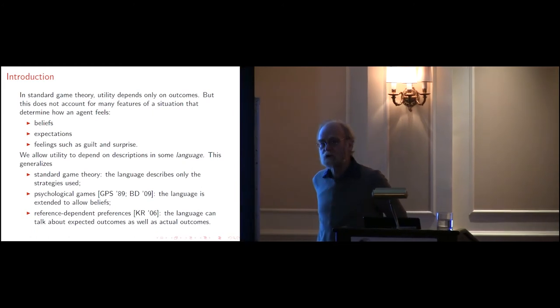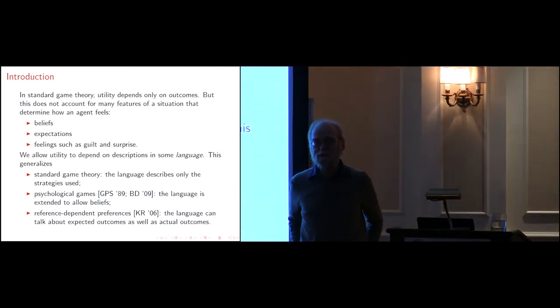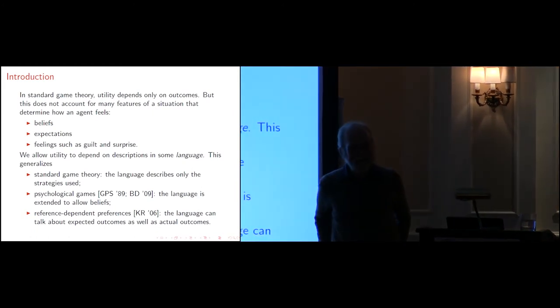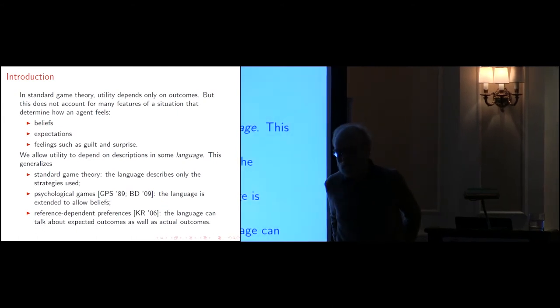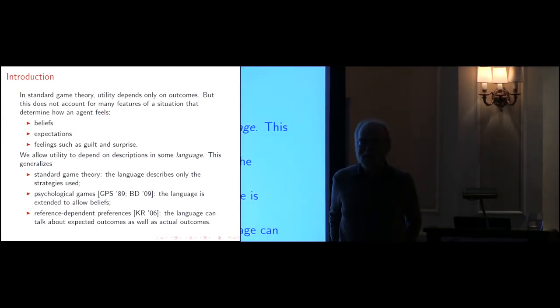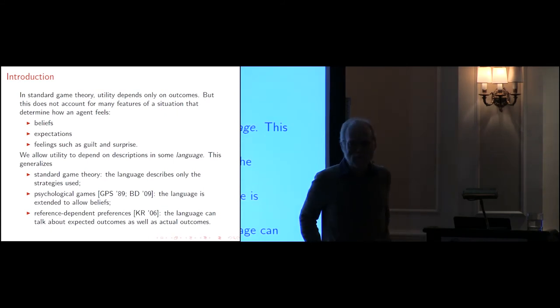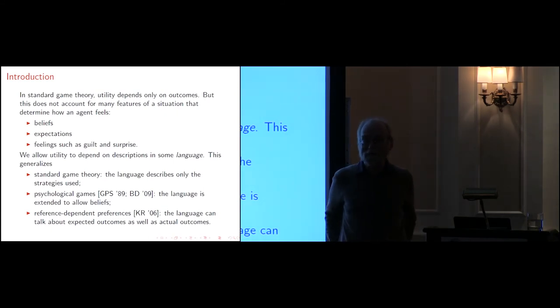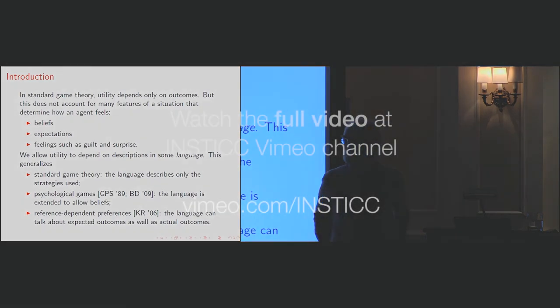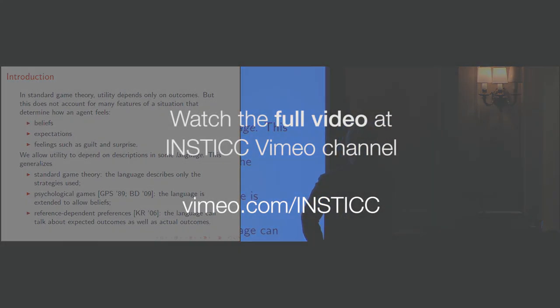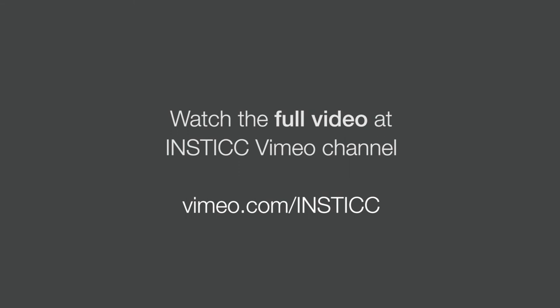So you're walking to a store, you want to buy shoes, you have some expectation of what the price will be. And your utility depends in part, it seems quite reasonable, on how the actual price compares to the price that you were expecting the shoes to be. Are they on sale? Is it a bargain? That makes you feel better. Quite independent of the fact that you got the shoes for $10. You got the shoes for $10 or maybe $100 when you were expecting to pay $150. Right? So that affects your utility.